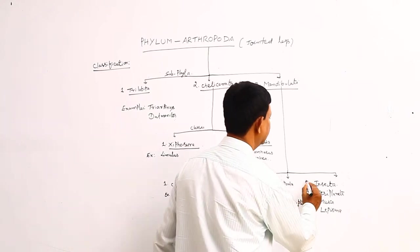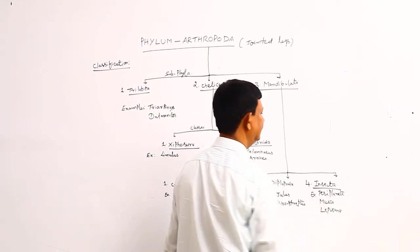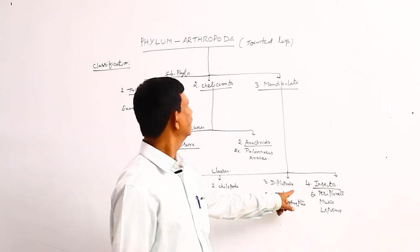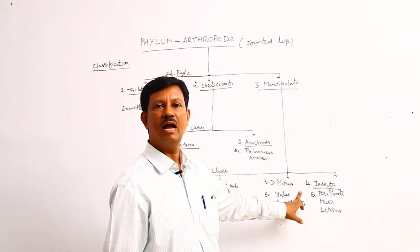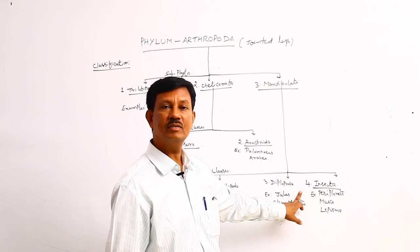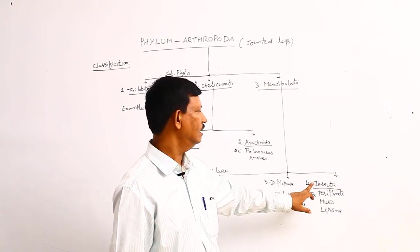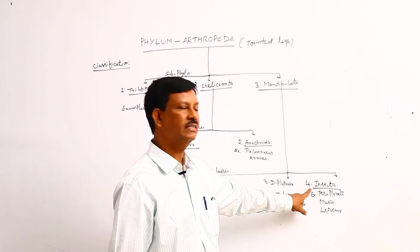The fourth one is Insecta. It is economically more important in the phylum. Large number of animals are present, nearly 80 percent of animals are included in this phylum. Study of insects is known as entomology.